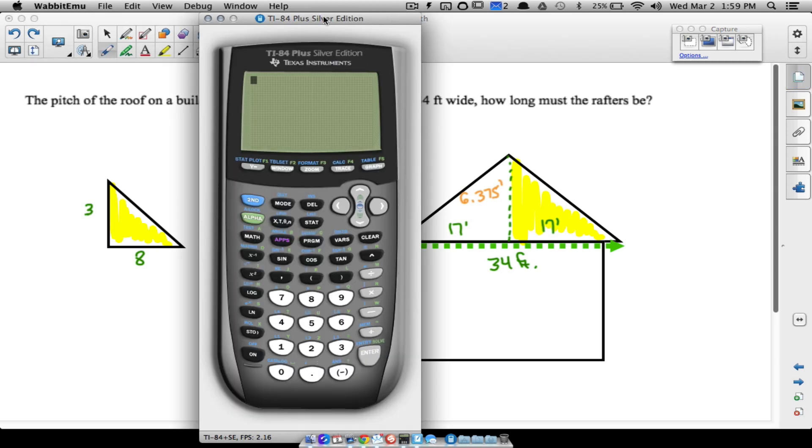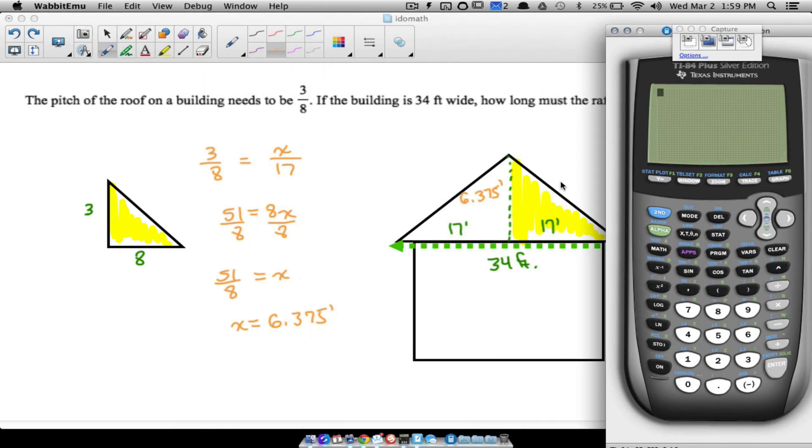Now let me show you a few things. Notice if we do rise over run with these two numbers, this is just a review of proportions, but 6.375 divided by 17, if I convert this to a fraction in simplest form, notice we do get 3/8. It's that same exact pitch, so that's good.